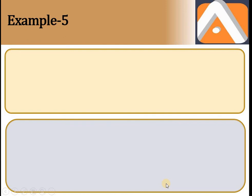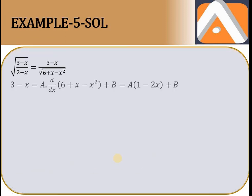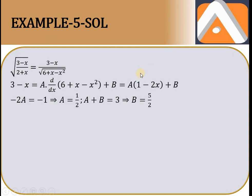Paanchwa question: integration of (3 - x) upon √(2 + x). Isko rationalize karo — (3 - x) se multiply aur divide karo numerator aur denominator mein. Numerator mein (3 - x)² ban jaata hai, aur denominator mein (2 + x)(3 - x) = 6 + x - x² aata hai. Ab yeh same same numerator linear upon √quadratic form mein aa jaata hai.